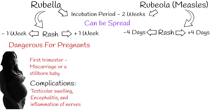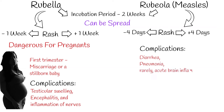Complications of measles are relatively common, ranging from mild ones such as diarrhea to serious ones such as pneumonia, and rarely, acute brain inflammation. Most fatal cases of measles occur due to pneumonia complications.